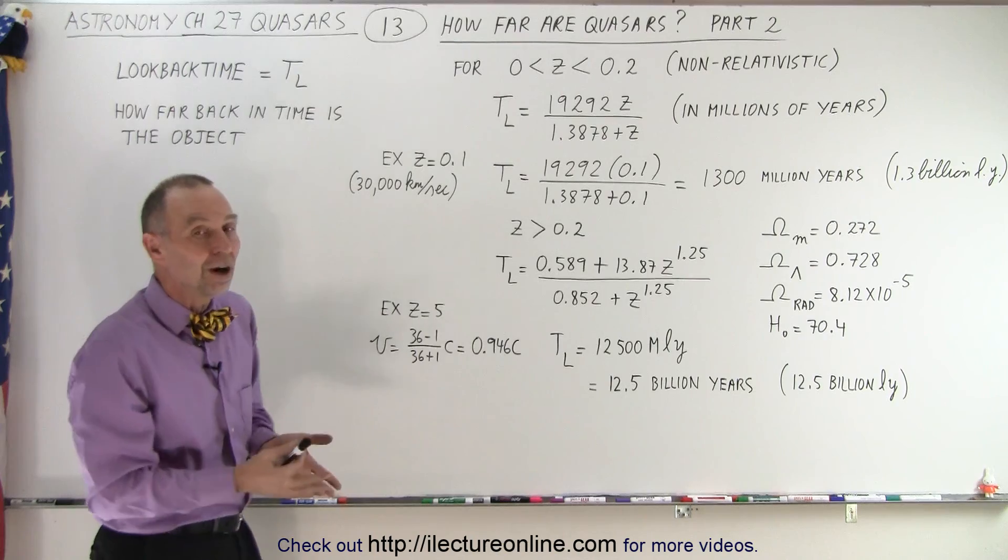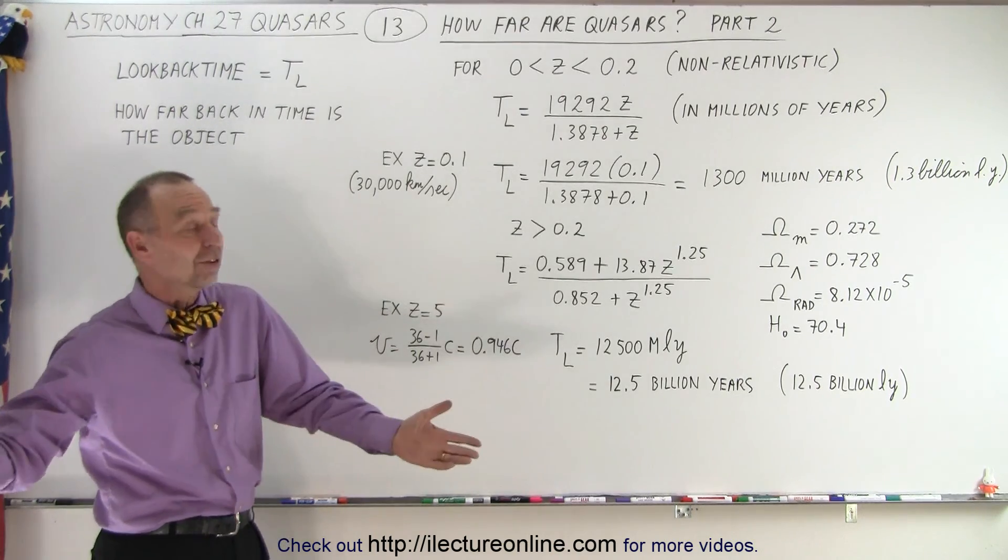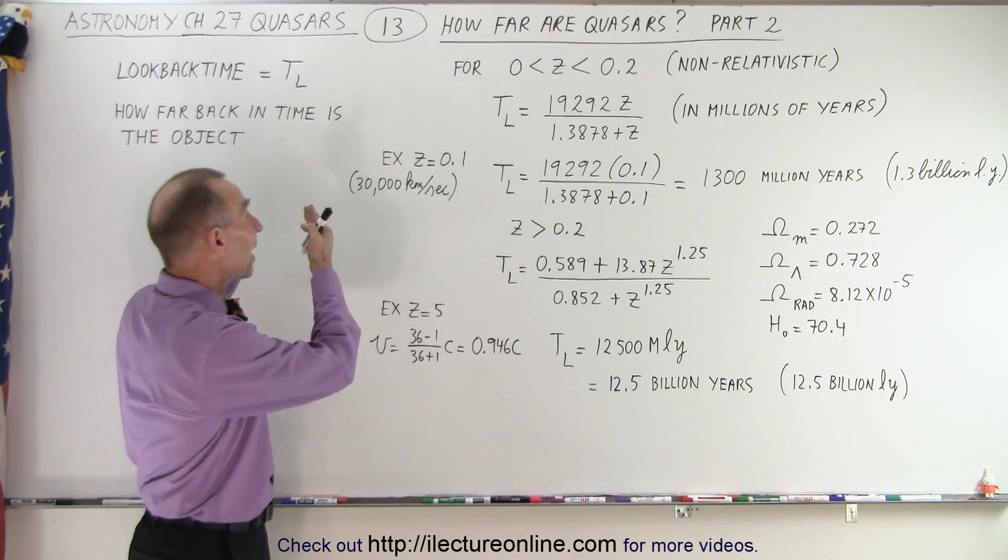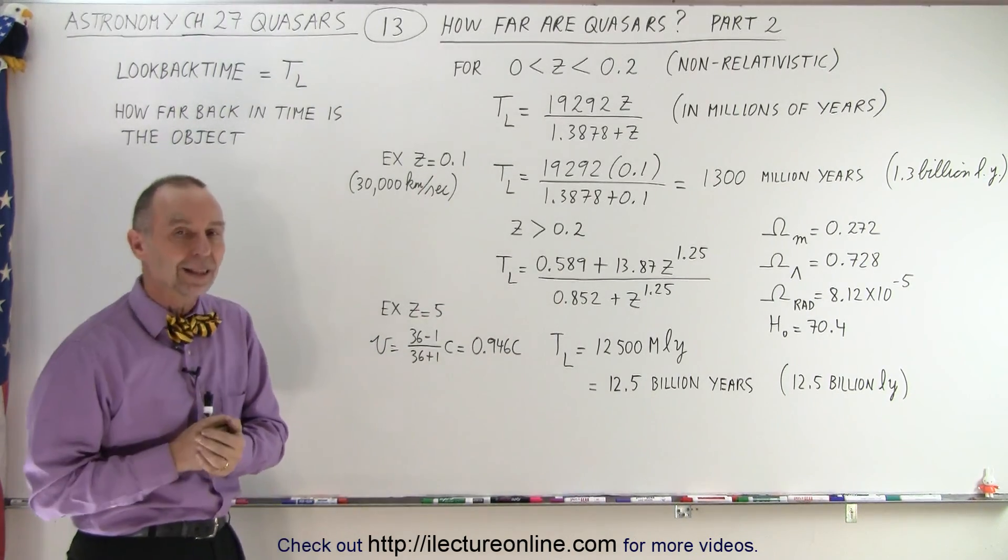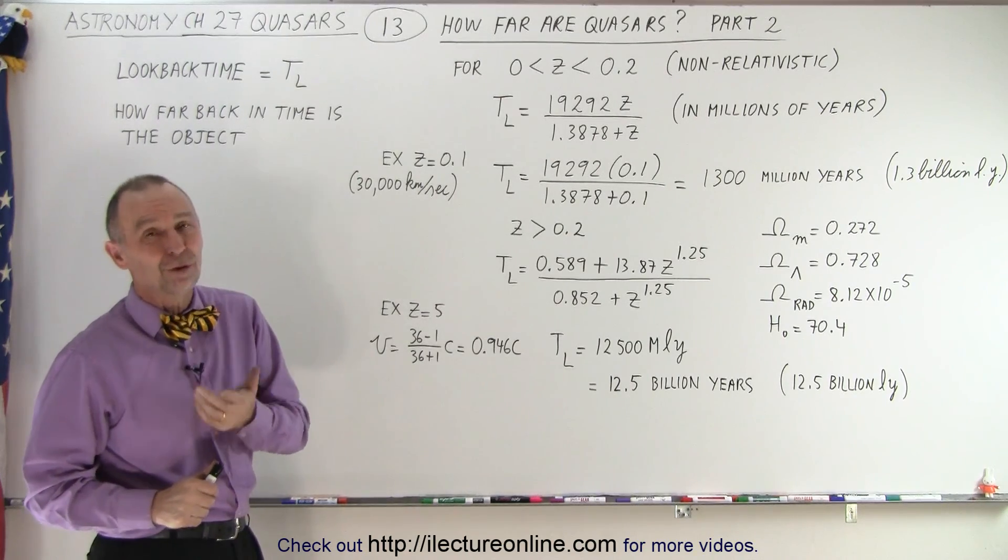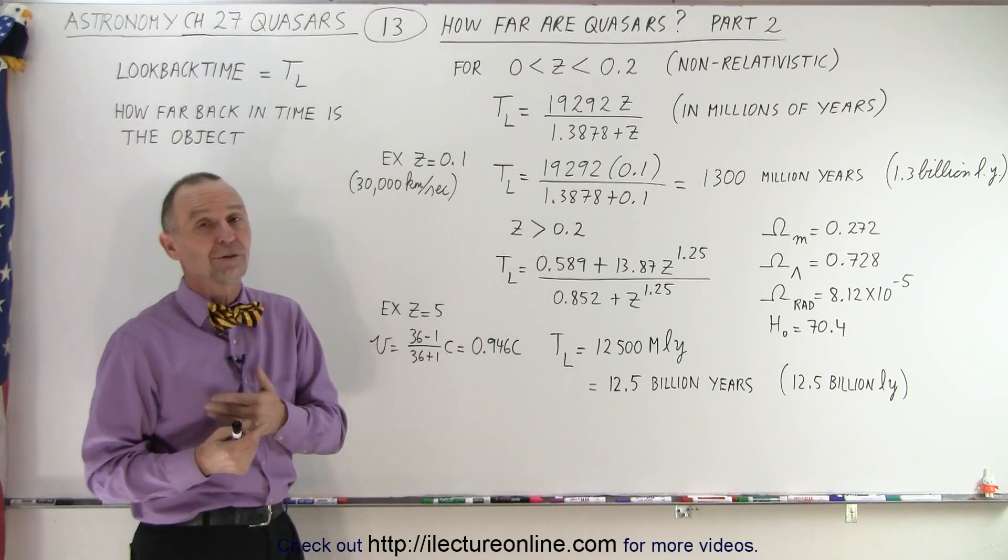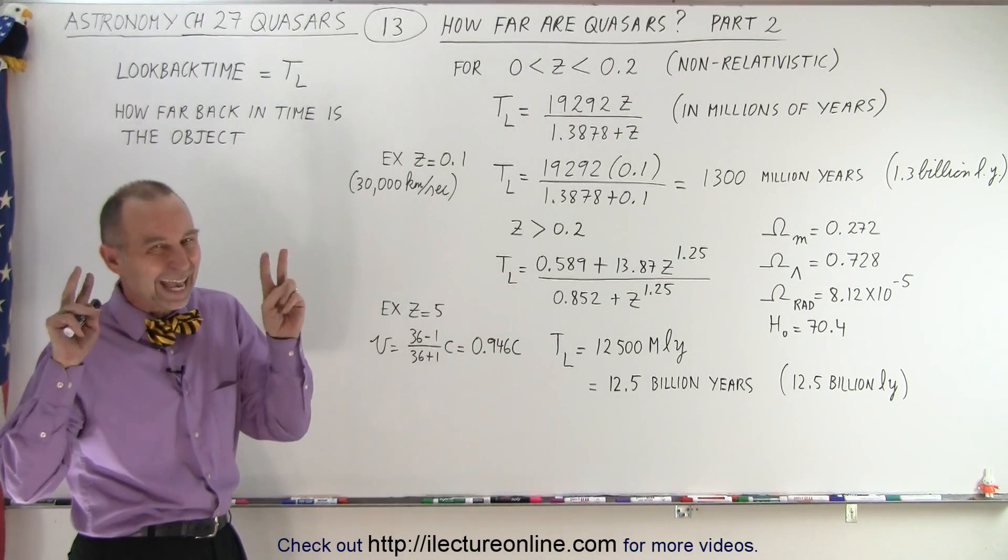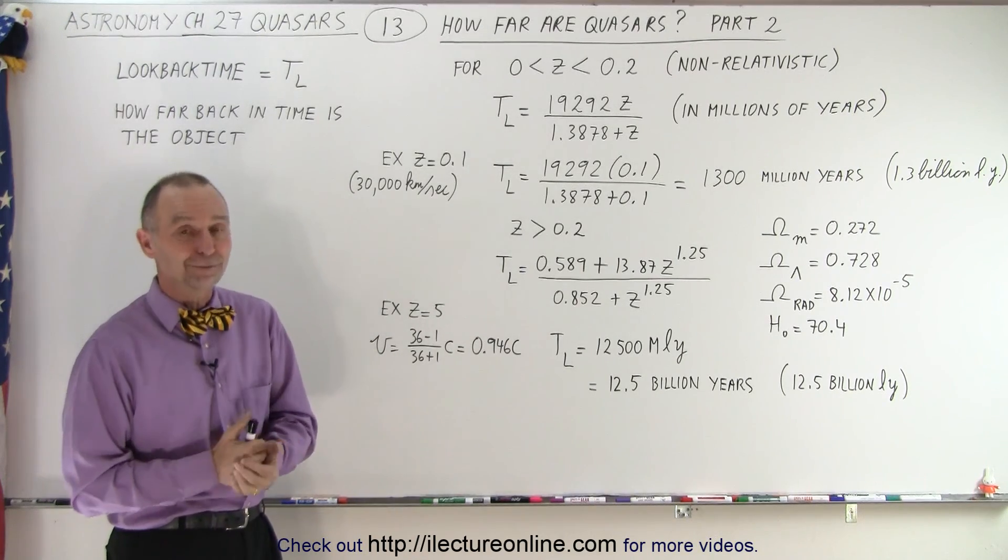But at least it gives you an idea of how else we can talk about distances to faraway objects like quasars in terms of look-back time or in terms of where the object was when the light left, not where the object is today. That's why we prefer z, the redshift, or we prefer v, the recessional velocity, as an indication of how far things are relative to one another. And that is how it's done.